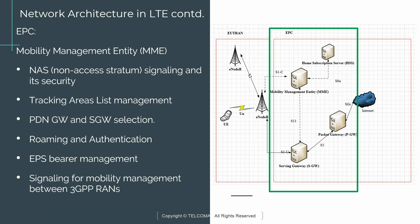Your subscribers would be distributed among those 100 eNodeBs because not all people are at the same place. To deliver effective service, there is optimization you can do on the core side. One optimization is to divide those 100 eNodeBs into zones or tracking areas. This really comes into play when you are trying to target users that are in idle mode.